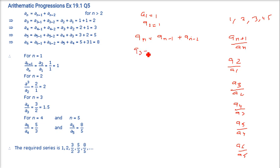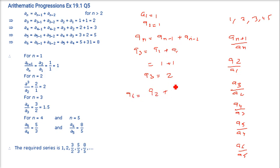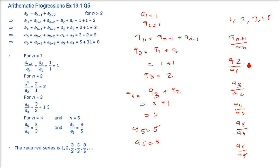First find the terms: a₃ = a₂ + a₁ = 1 + 1 = 2. a₄ = a₃ + a₂ = 2 + 1 = 3. Similarly a₅ = 5 and a₆ = 8.